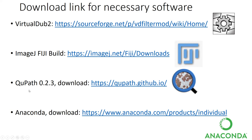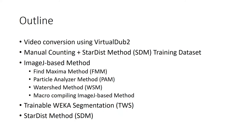The next application is QPath 0.2.3. We use this to annotate the cells because it's easier to annotate using QPath rather than Fiji. It can also be used to annotate images for training in StarDist. The final one is Anaconda, which is used for StarDist training.